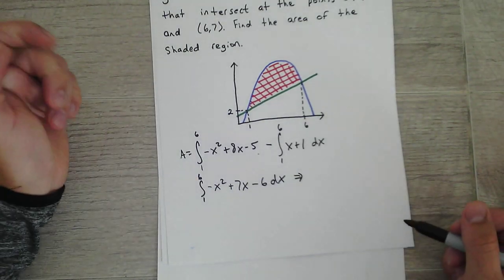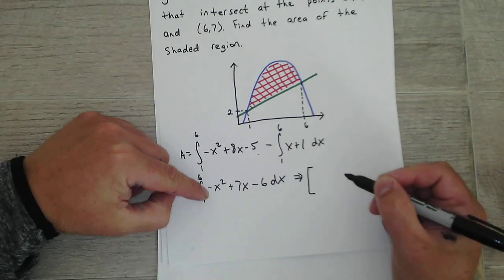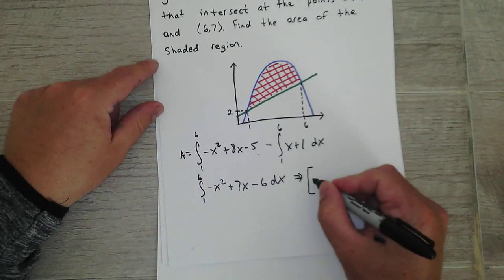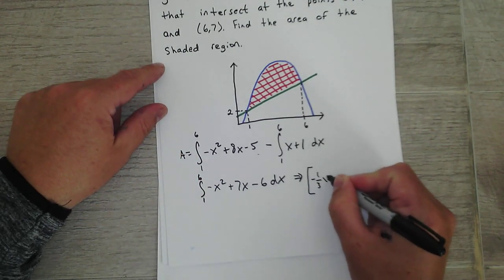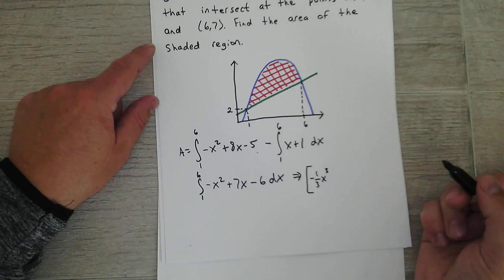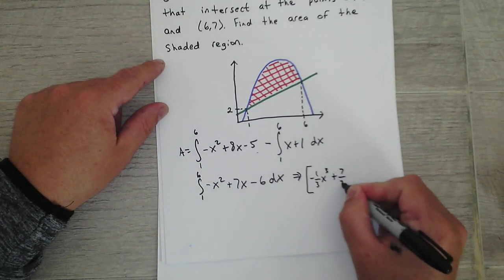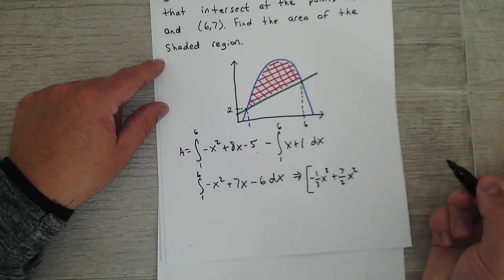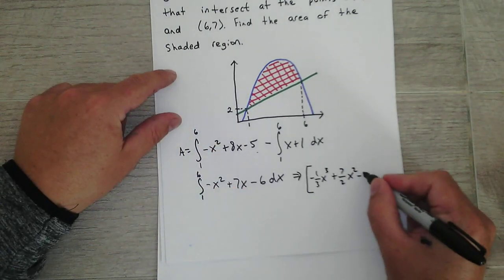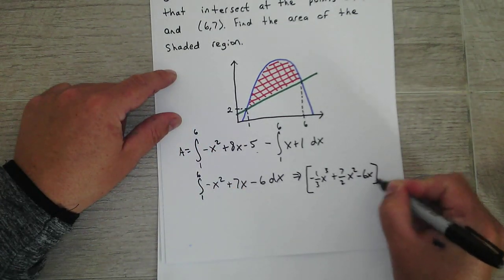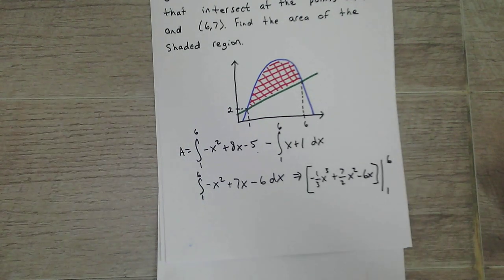Okay, so let's integrate this. So negative x squared, that's negative 1 third x cubed. Okay, 7x, that's 7 halves x squared. And then negative 6 is just negative 6x. Okay, evaluated from 1 to 6.